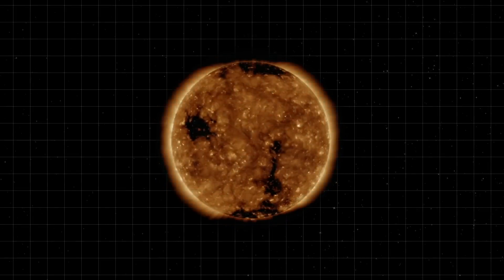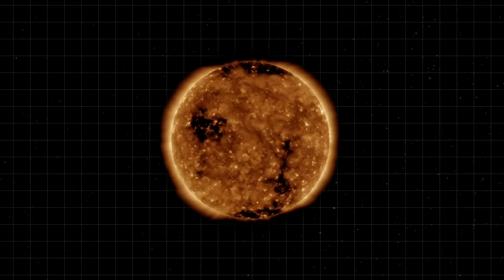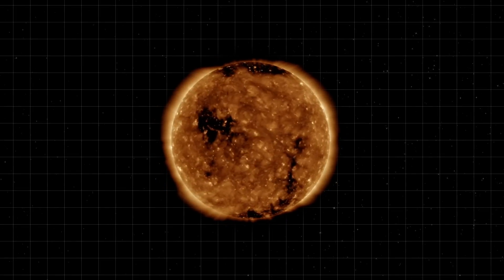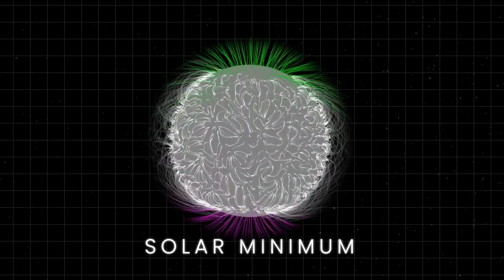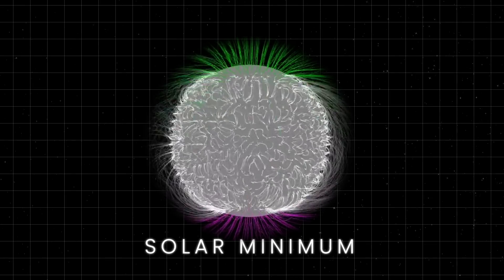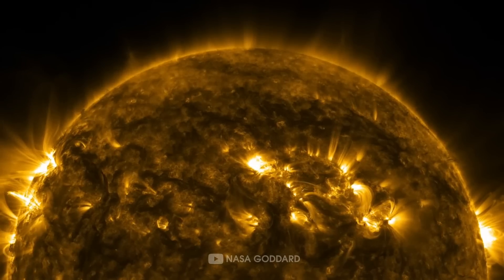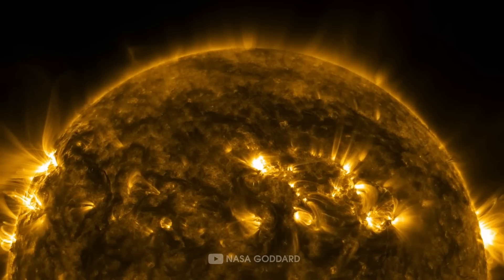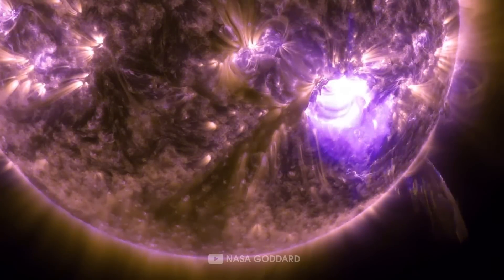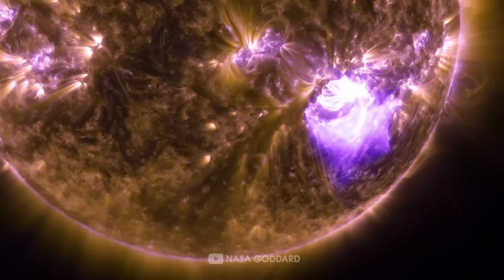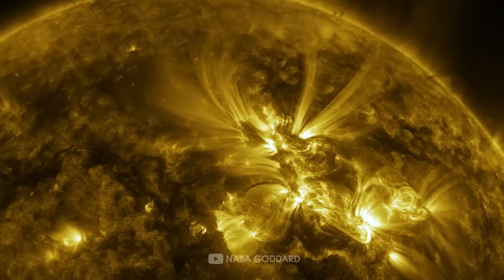After the polarity reversal, the Sun enters a period of declining activity, leading back to solar minimum. The magnetic field simplifies again and the cycle is ready to start anew. Currently, we are in the solar maximum stage and the Sun's magnetic field is going to flip. During this stage, we can expect to see some incredible activity from the Sun that could be as deadly as it is fascinating.